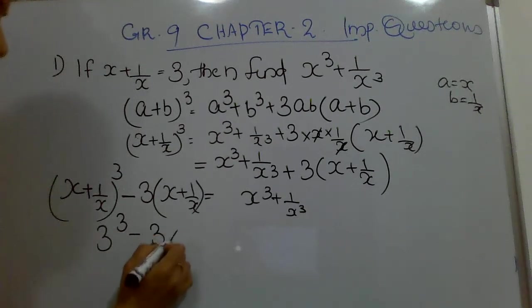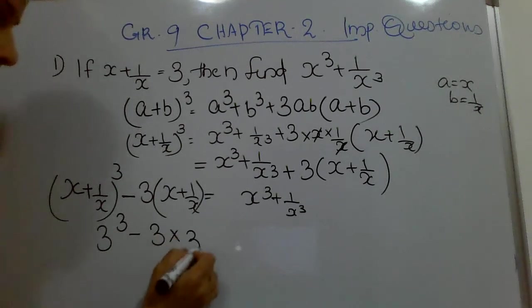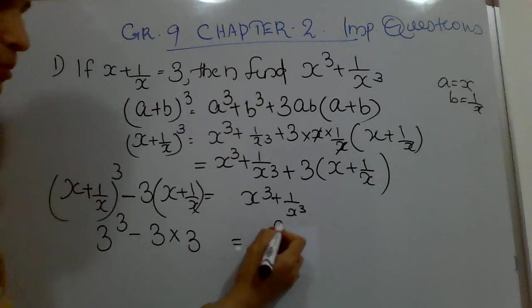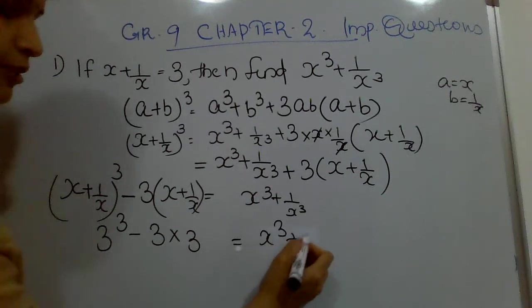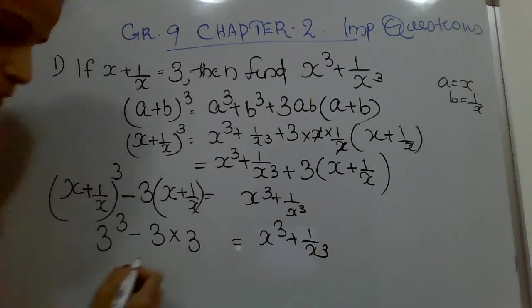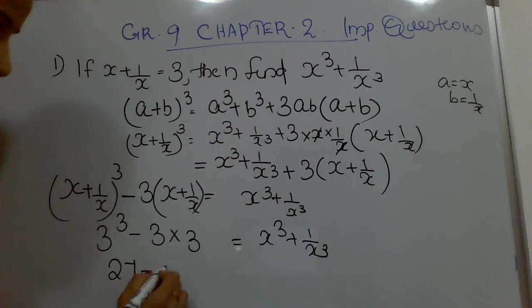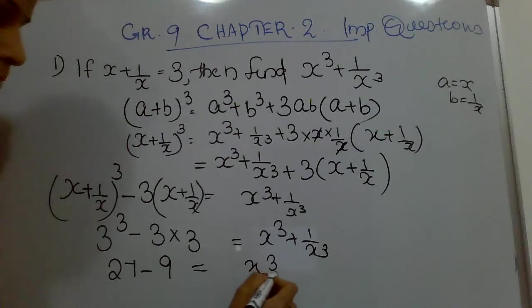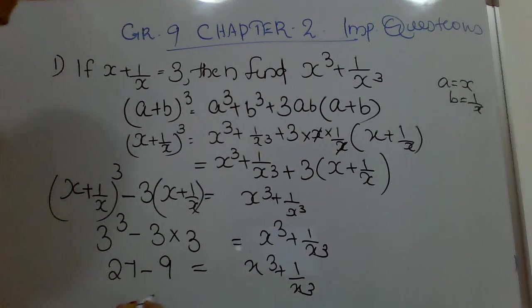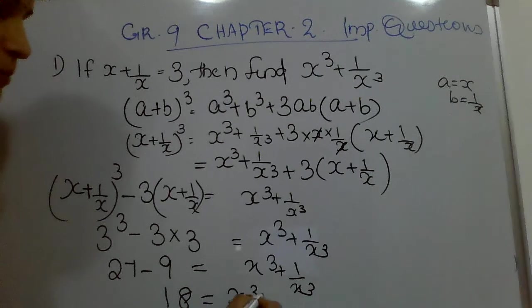Substituting, we get 3³ minus 3 × 3, which equals x³ + 1/x³. What is 3³? It is 27. So 27 minus 9 equals x³ + 1/x³.